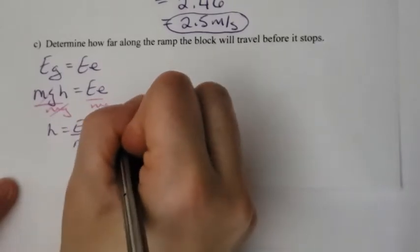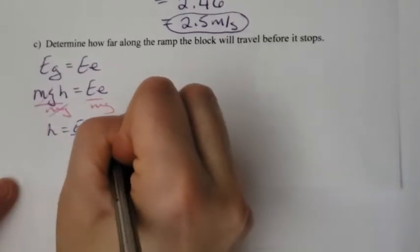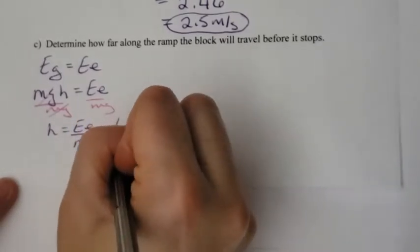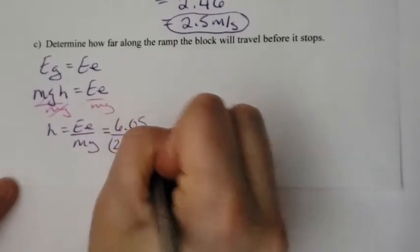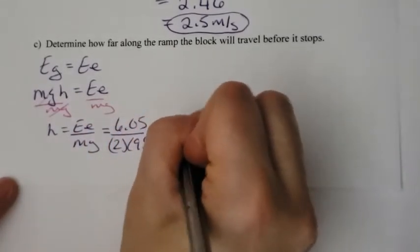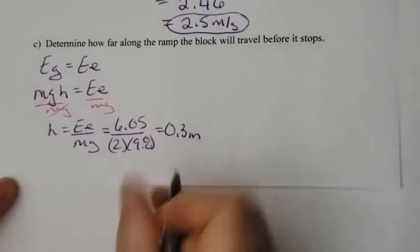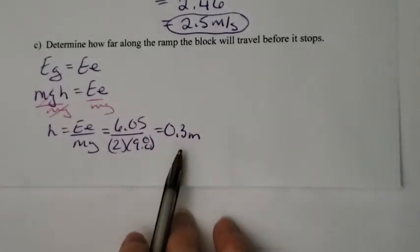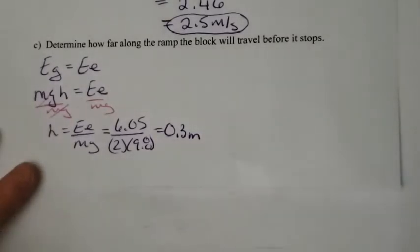MGs cancel. So H is equal to the elastic energy divided by MG. We plug our numbers in: 6.05 is what I calculated earlier, the mass was 2, G is 9.8. And I end up with 0.3 meters. That's a height straight up.